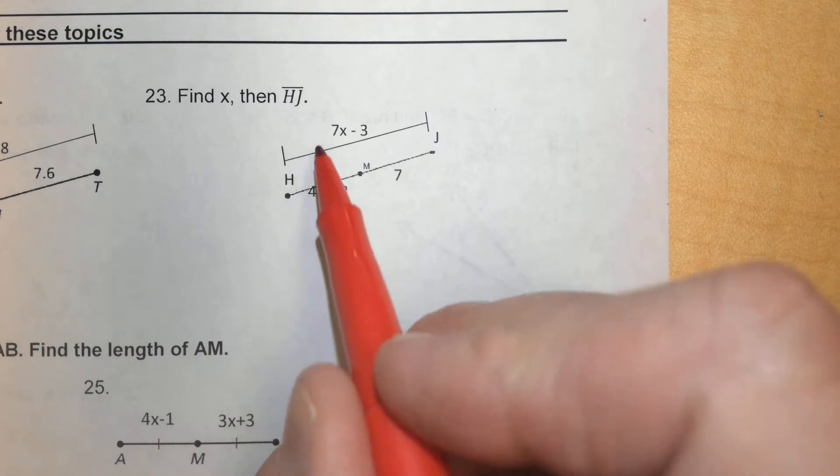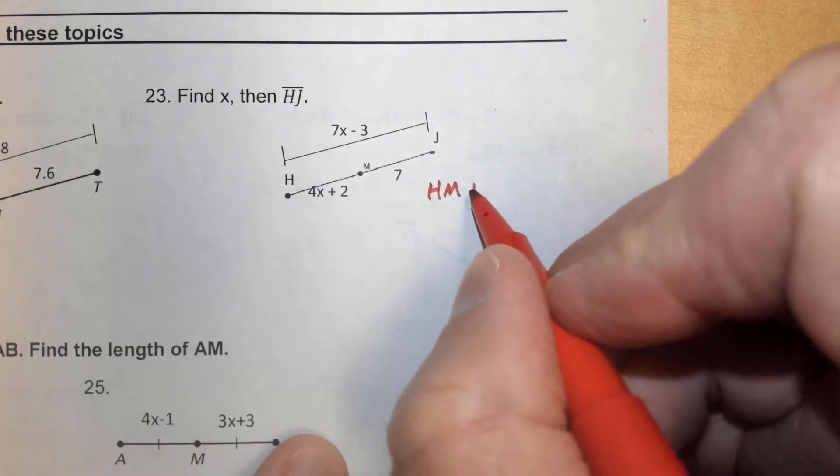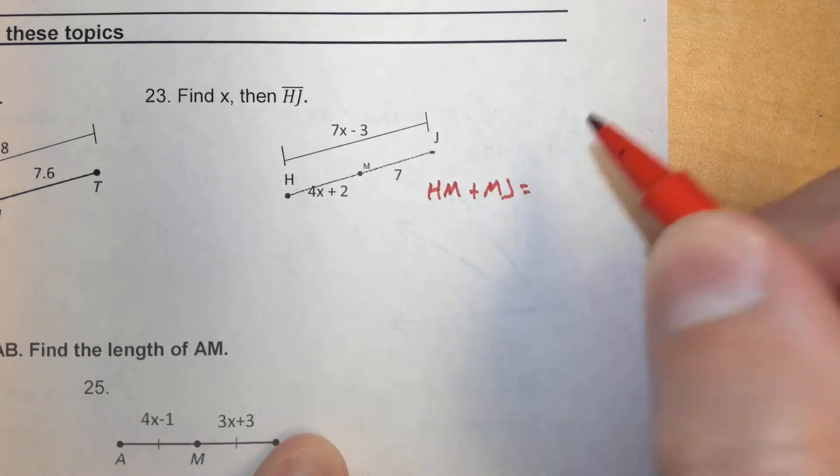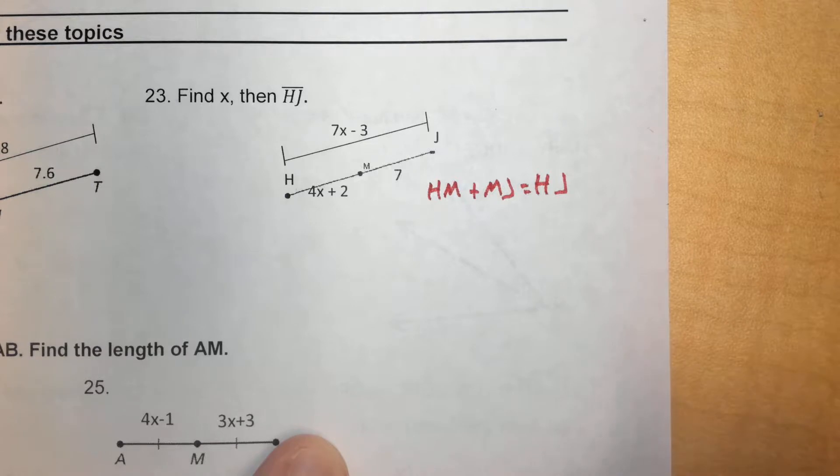So, if we want to write a word equation to help us solve this problem, H to M, the distance from H to M, plus the distance from M to J, would equal the distance from H to J. And that's how we're going to set up this equation to solve it.